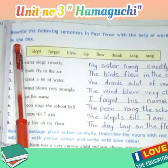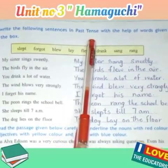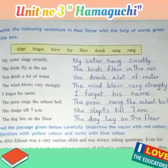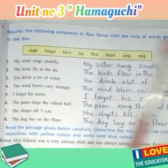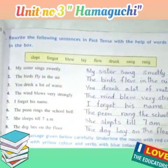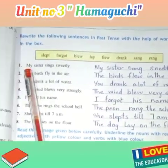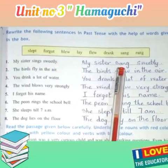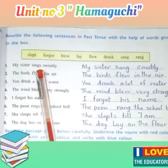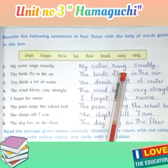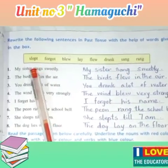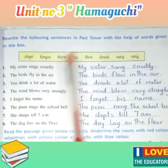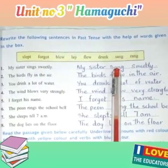In this question the statement is: rewrite the following sentences in past tense with the help of words given in the book. Same like the previous question — they write the statement in present tense and we have to write it in past tense. Let's start. My sister sings sweetly — My sister sang sweetly. In this statement we change 'sings' into 'sang', meaning we change the first form of verb into the second form of verb, present tense into past tense.